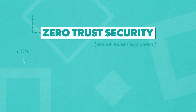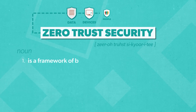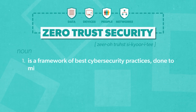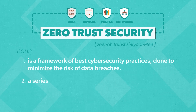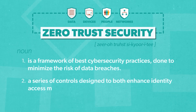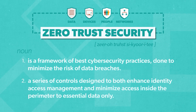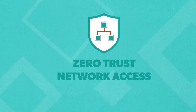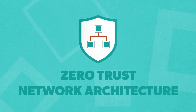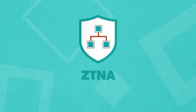Zero Trust Security is a framework of best cybersecurity practices done to minimize the risk of data breaches. It's a series of controls designed to both enhance identity access management and minimize access inside the perimeter to essential data only. Today, we're going to take things a step further and talk about Zero Trust Network Access, or Zero Trust Network Architecture — ZTNA for short.